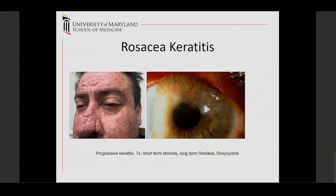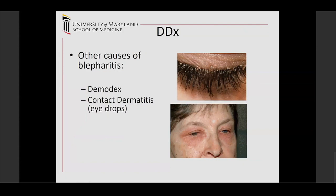Rosacea keratitis is associated with meibomian gland disease and blepharitis and can cause progressive corneal thinning, risk of infection, and even perforation. Treatment includes steroids and long-term doxycycline systemically — doxycycline is probably the key. Other causes of blepharitis include Demodex (small mites on the eyelids) and contact dermatitis, usually caused by other eye drops.